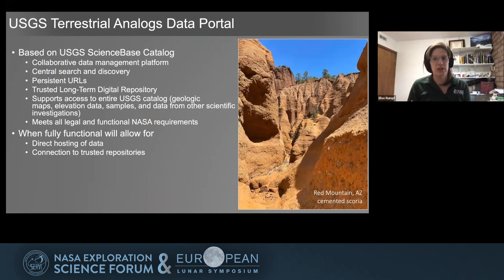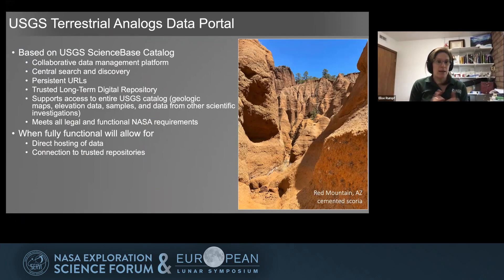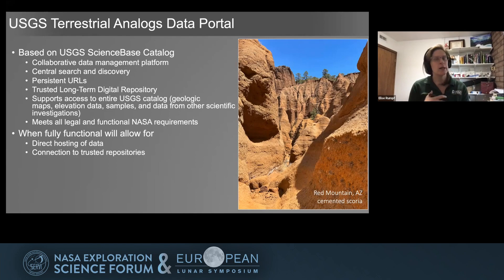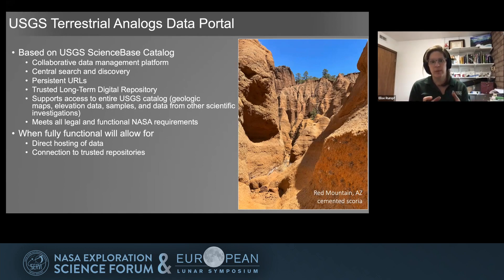At the USGS Astrogeology, we have started creating our own data portal, which is pretty exciting. This is based on the USGS ScienceBase catalog. ScienceBase is a trusted long-term repository that already exists — we use it internally within the USGS to host our data, and then it becomes publicly available. It has strict metadata standards, is trusted within the community, allows for persistent URLs and central search and discovery of the entire USGS catalog. It also meets the legal and functional requirements needed by NASA for a data portal repository. So it's nice that we have this catalog already available that we can build on to make a terrestrial analog data portal.